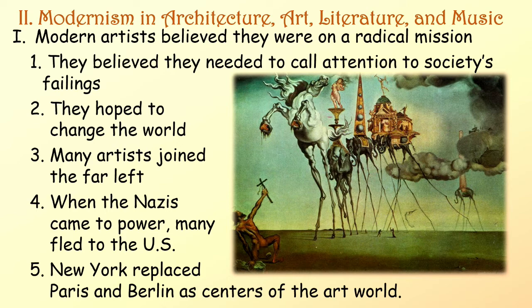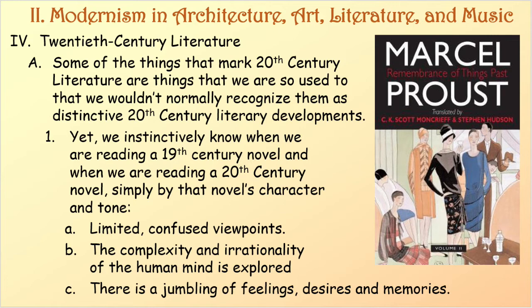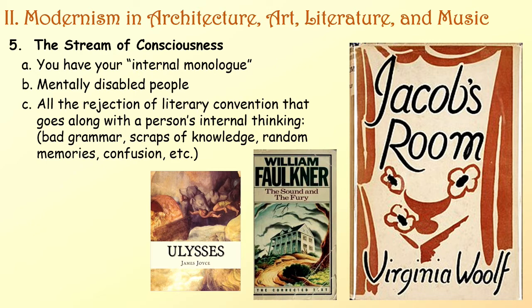20th century literature has features so familiar we wouldn't normally recognize them as distinctive developments, yet we instinctively know when we're reading a 19th versus 20th century novel. 20th century novels have limited, confused viewpoints; explore the complexity and irrationality of the human mind; and jumble feelings, desires, and memories. The stream of consciousness—including internal monologue, mentally disabled characters, bad grammar, scraps of knowledge, random memories, and confusion—is part of 20th century literature.